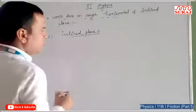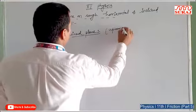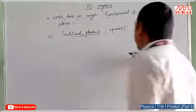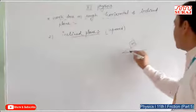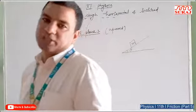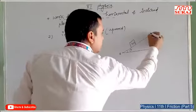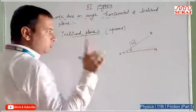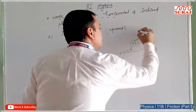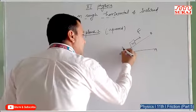For the inclined plane, we will calculate work done in both directions. First, we consider the upward direction. Consider a body of mass M on a rough inclined plane which makes an angle θ with the horizontal. To move the body upward, we apply a force F in the upward direction. The force of friction acts at the point of contact, opposite to the applied force.